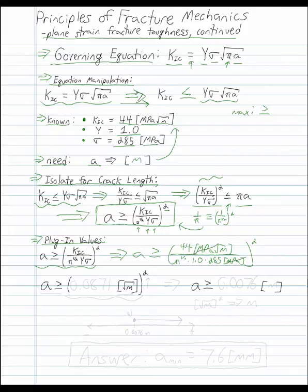First up, those MPa cancel out, and we can put this into the calculator to find that A is greater than or equal to 0.0871 square root meters, and all of this is going to be squared. We'll square the value as well as the units, leading to A is greater than or equal to 0.0076 meters, since meters squared goes to meters.